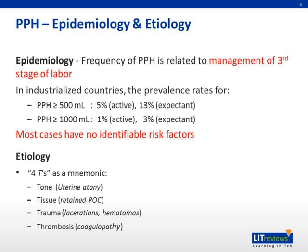Now let's go on to epidemiology and etiology of PPH. The epidemiology of PPH is related to the management of the third stage of labor. As we can see in industrialized countries, the prevalence rates are as follows. For PPH of more than 500 mL, active management has a prevalence rate of around 5%, whereas expectant management results in 13% of PPH. For PPH of more than 1,000 mL, active management is around 1% and expectant management around 3%. Most cases of PPH have no identifiable risk factors.